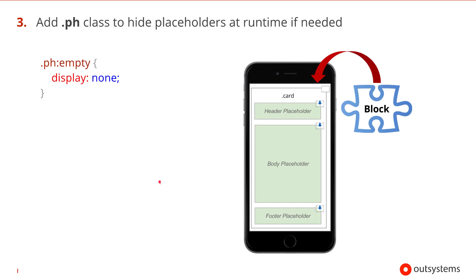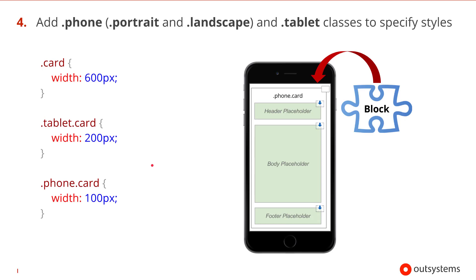This class would set the display property to none. For the next step we can optionally add classes for phone and tablet as well as for portrait and landscape modes. This will help us fine-tune our CSS for multiple devices and orientations. If our card has a width of 600 pixels by default we could use the classes to set it to 200 pixels on a tablet and 100 pixels on a phone.